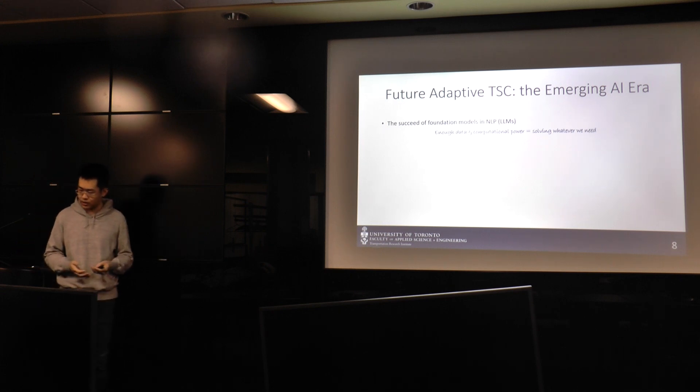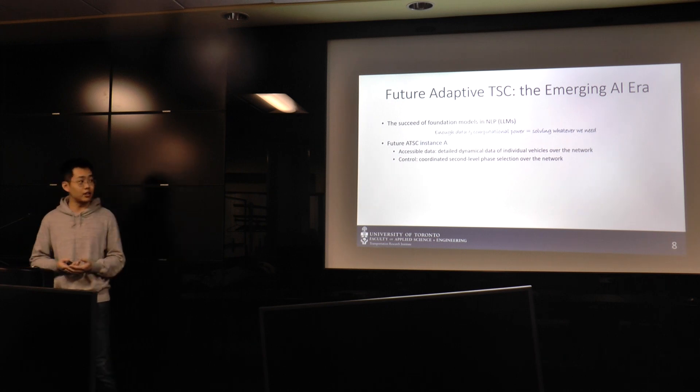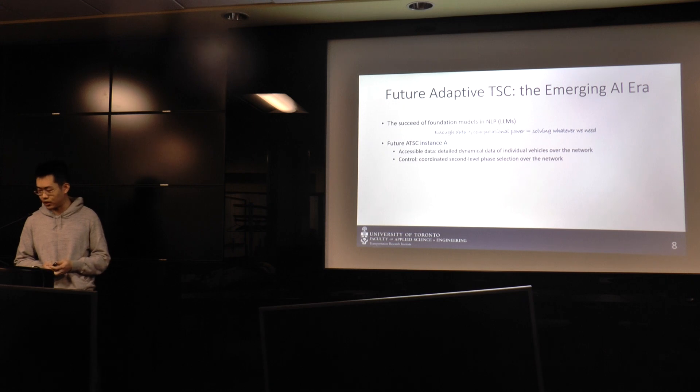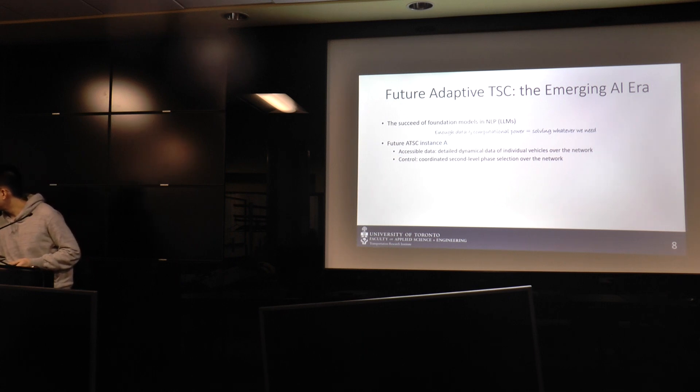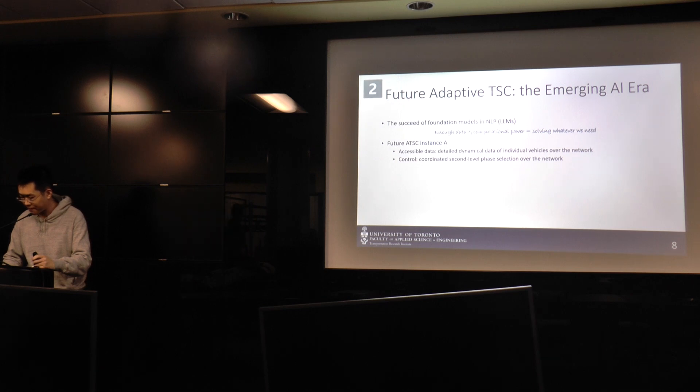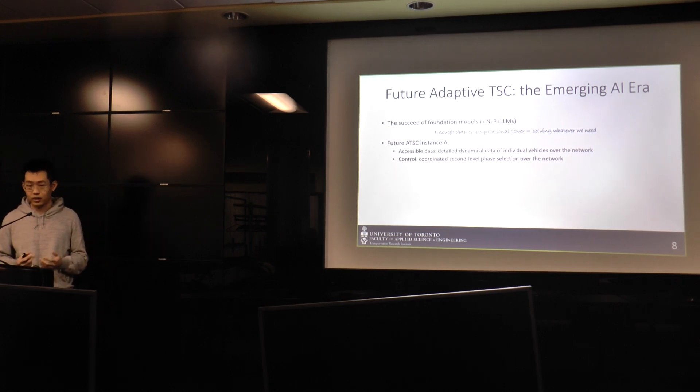So from all these success, somebody would claim that with enough data and computational power, we can solve anything we want. So in the near future, we call it the future of ATSC instance A. Imagine that we have access to the detailed trajectory data of each individual vehicles in the road network, and we have enough computational power to optimize whatever we want. Yeah, in the short future, we might be able to access to detailed data, and we can gain finer control, we can coordinate the signal at a second level over the whole network.